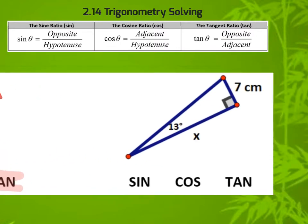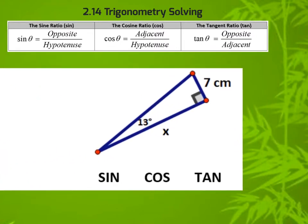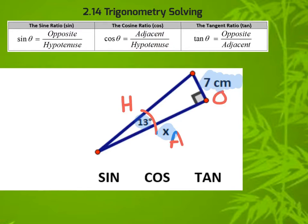What we're trying to show you is how to decide which ratio to use. Our angle is here, this is our adjacent, this is our hypotenuse, this is our opposite. We have our opposite, we want to know x, and we have our angle. So this involves opposite and adjacent — that particular ratio is our tangent ratio.